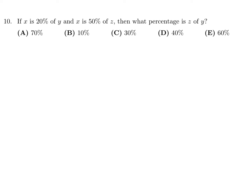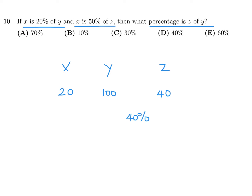Question number 10. If X is 20% of Y and X is 50% of Z, then what percentage of Z is Y? The easiest approach is to use numbers. Let Y equal 100. Then X is 20% of Y, so X equals 20. Since X is 50% of Z, X is half of Z, so Z equals 40. Comparing Z to Y: 40 is 40% of 100. So Z is 40% of Y. Number 10, the answer is D.